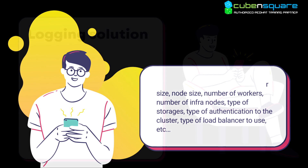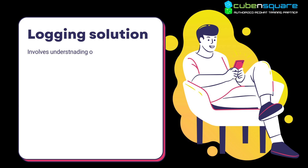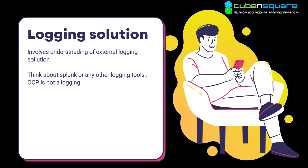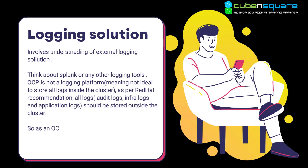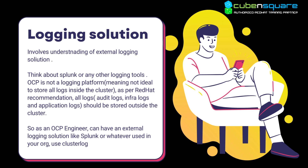Logging solutions involve understanding external logging tools — think Splunk or similar. OpenShift is not a logging platform, and as per Red Hat's own recommendation, it is not ideal to store all logs inside the cluster. Audit logs, infra logs, and application logs should all be stored outside the cluster. As an OCP engineer, he is responsible for setting up an external logging solution like Splunk and using a cluster log forwarder in OCP to send the logs there.